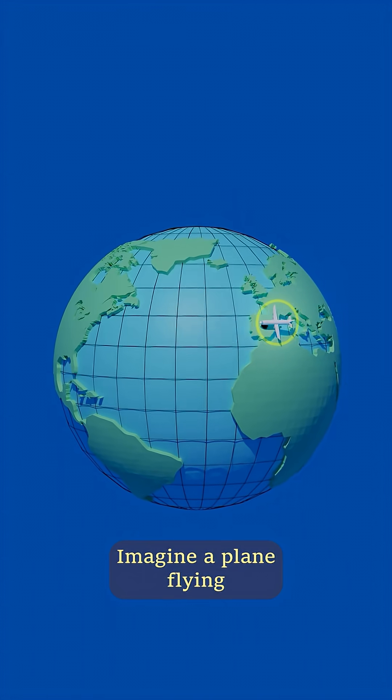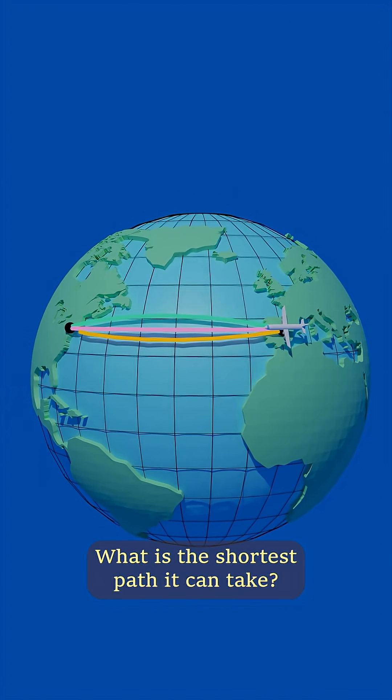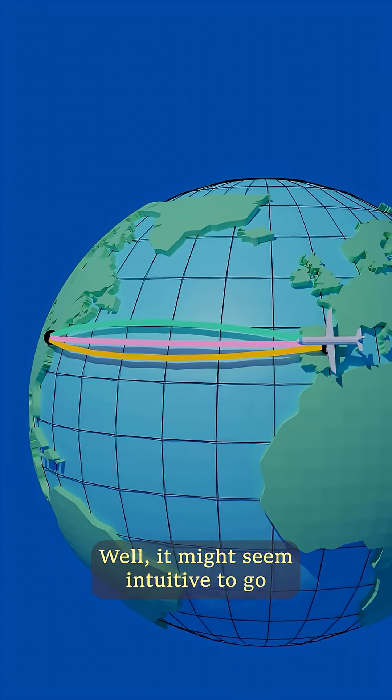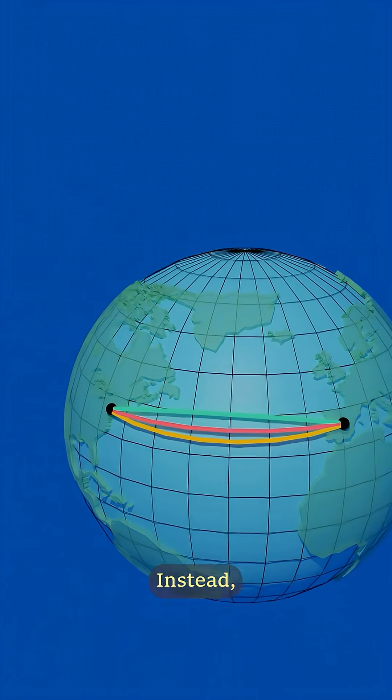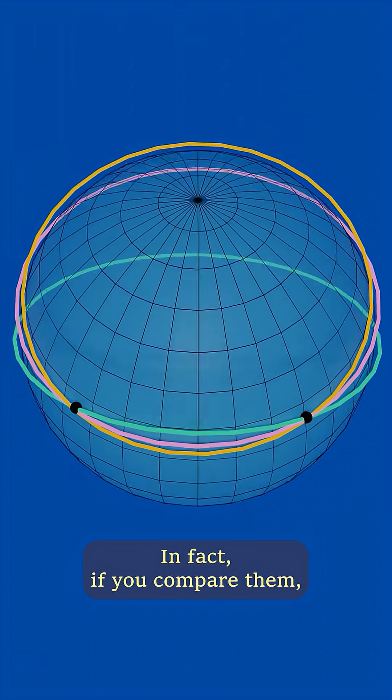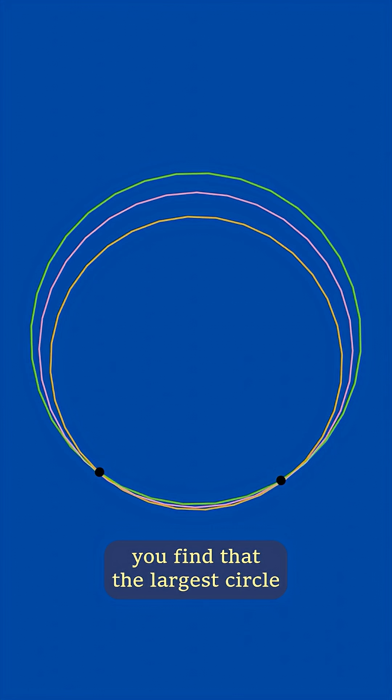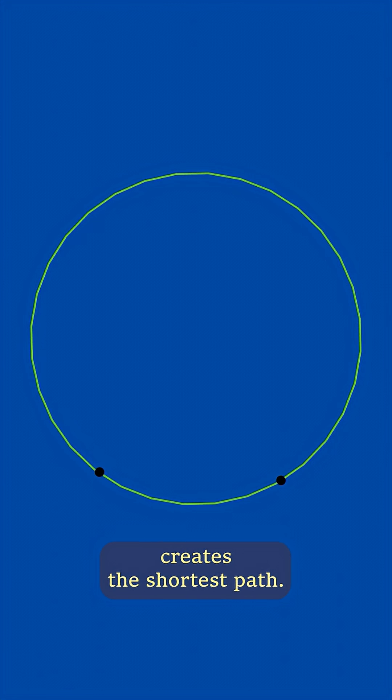Imagine a plane flying from Madrid to New York. What is the shortest path it can take? Well, it might seem intuitive to go along the latitude but that's not the shortest option. Instead, let's look at the circles that connect these points. In fact, if you compare them, you find that the largest circle creates the shortest path.